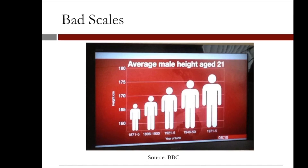In this video, we are going to look at scales. This first plot shows the average height of a 21-year-old male in centimeters. The x-axis is time, starting in 1871 and ending in 1975. Each person represents the height at a different point in time, and the points are evenly spaced in time, so the x-axis is okay.